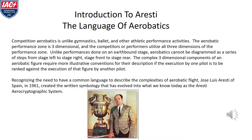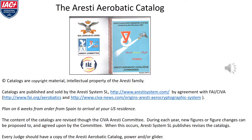Recognizing the need to have a common language to describe the complexities of aerobatic flight, José Luis Aresti of Spain in 1961 created the written symbology that has evolved into what we know today as the Aresti Aerographic System. Aresti catalogs are published and sold by the Aresti System S.L. by agreement with FAI SIVA. Plan on six weeks since you're ordering it from Spain. The contents of the catalog are revised by an Aresti committee as part of SIVA, and during each year new figures or figure changes can be proposed to and agreed upon by the committee. Every judge should have a copy of the Aresti Aerobatic catalog — a power or a glider catalog as appropriate.